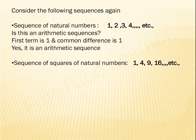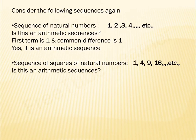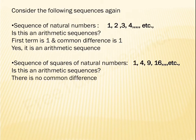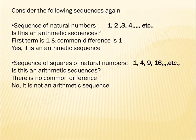Consider the sequence of squares of natural numbers: 1, 4, 9, 16. Is this an arithmetic sequence? Let us check: 4 − 1 = 3, but 9 − 4 = 5. The differences are not equal — 3 and 5 — so there is no common difference. Hence, the sequence of squares of natural numbers is not an arithmetic sequence.